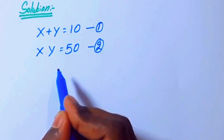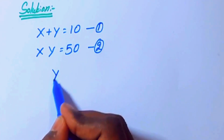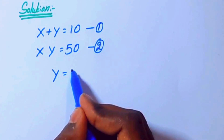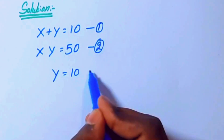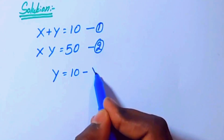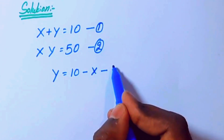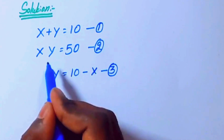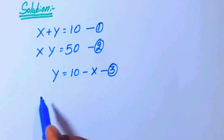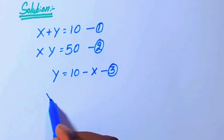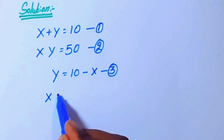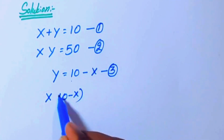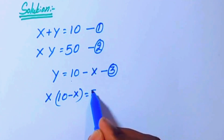We are going to find from equation 1 a new equation 3: y equals 10 minus x. This is equation 3. Now we know y, so we are going to substitute this y in equation 2. So x times (10 minus x) equals 50.